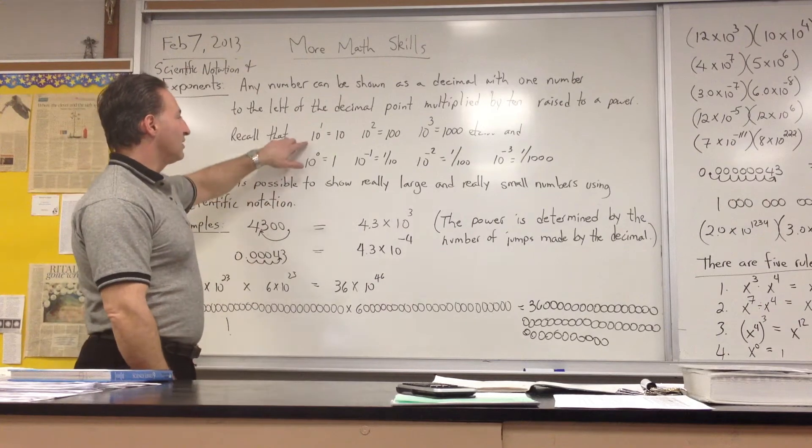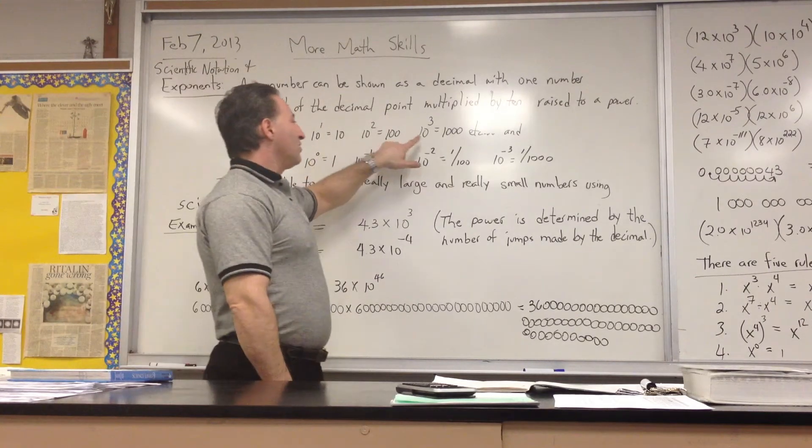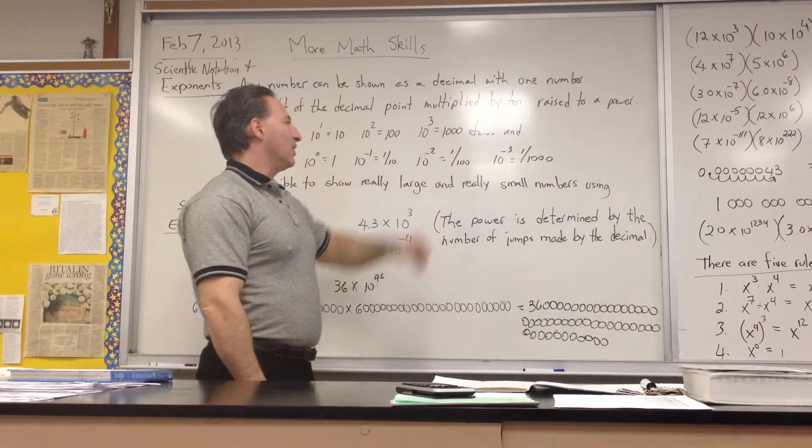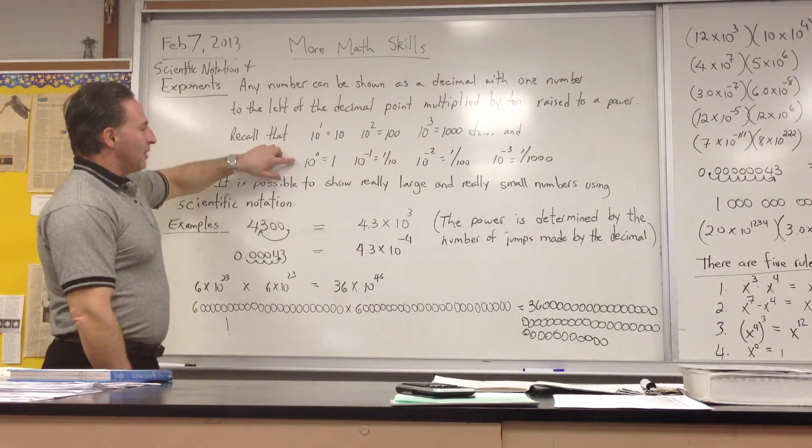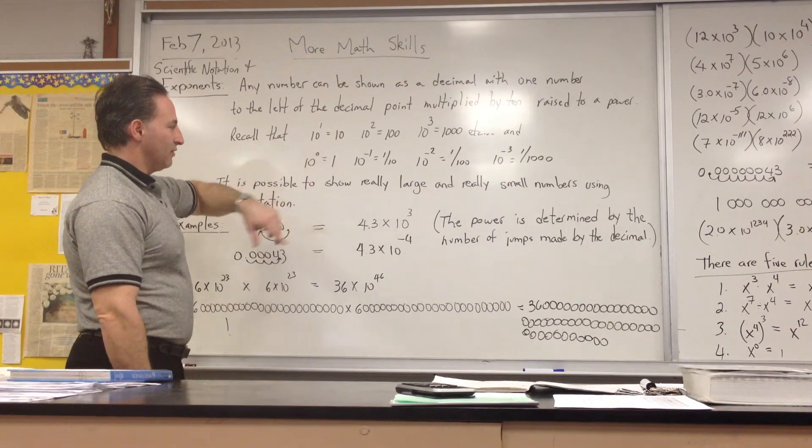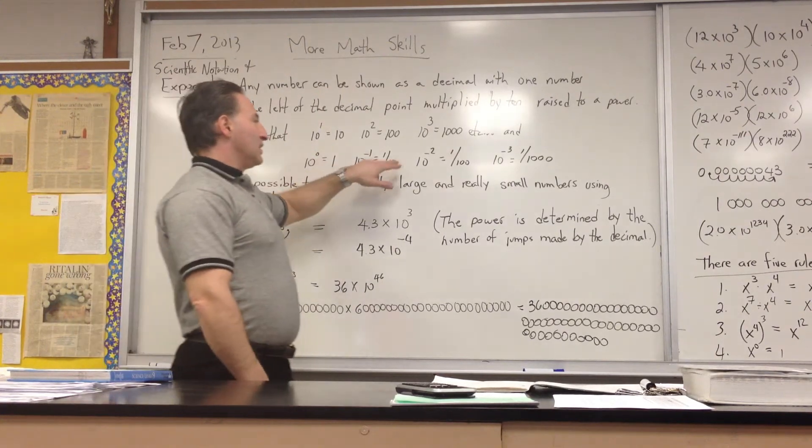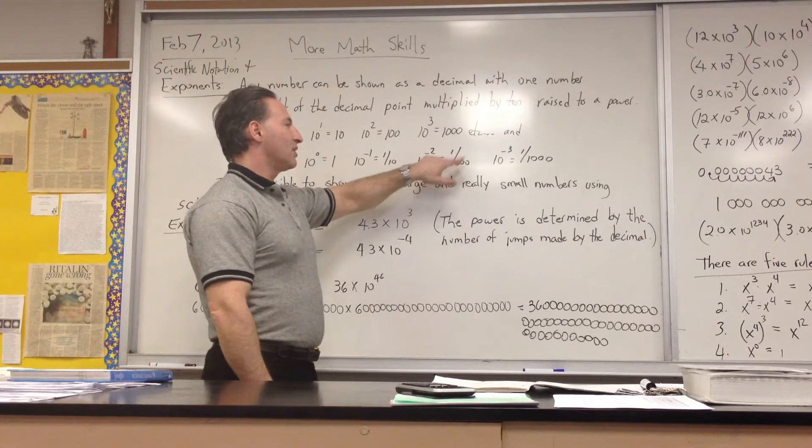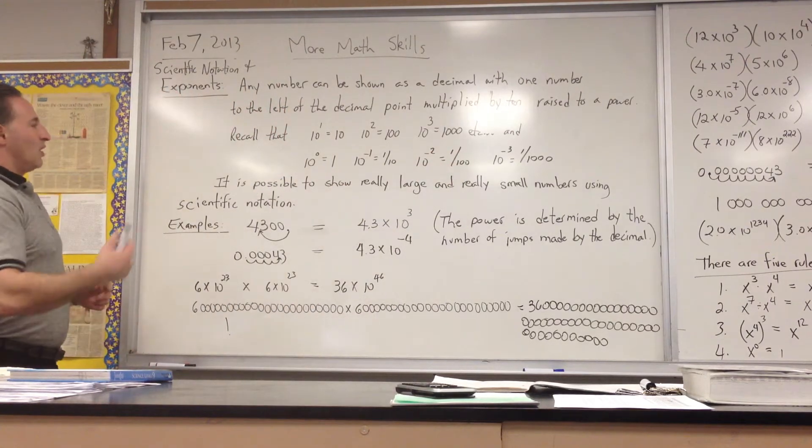So we recall that 10 to the power of 1 is equal to 10, 10 to the power of 2 is 100, 10 to the power of 3 is 1,000, etc. And if you raise anything to the power of 0, it equals 1. So 10 to the 0 would give you 1, 10 to the minus 1 is 1 tenth, 10 to the minus 2 is 1/100, 10 to the minus 3 is 1/1000, and so on.